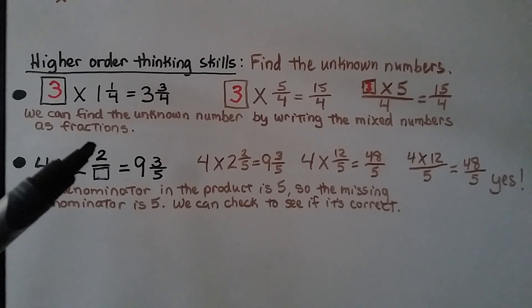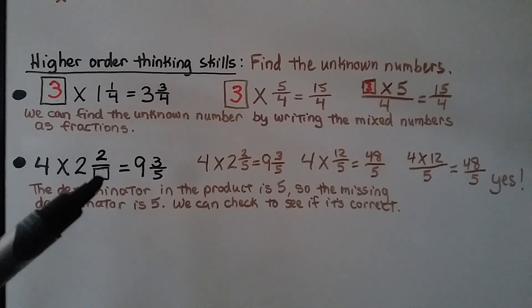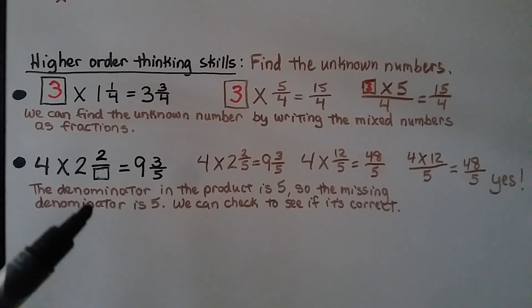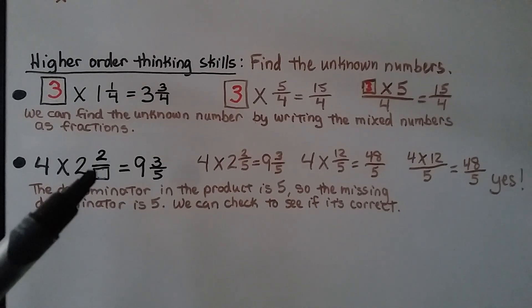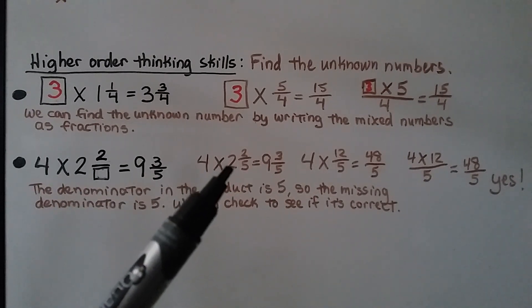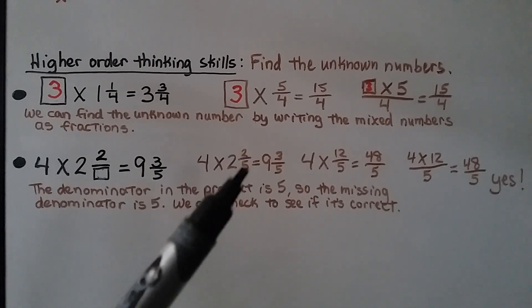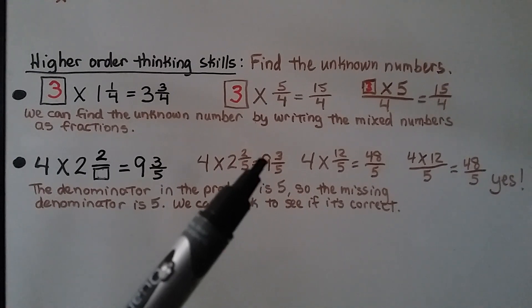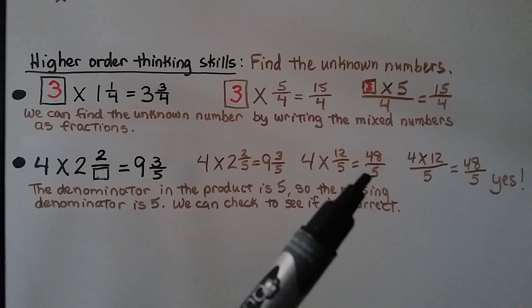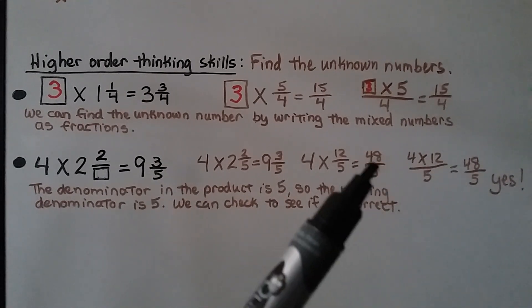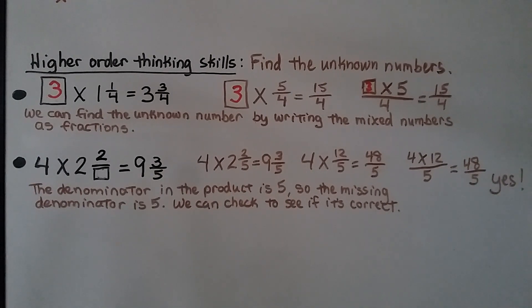Here we have 4 times 2 with 2 and a missing denominator, equal to 9 and 3 fifths. The denominator in the product is 5, so the missing denominator must be 5. We put a 5 there and do the multiplication to see if it works. If that's a 5, we'll have 2 and 2 fifths. We write these as fractions greater than 1: 2 times 5 is 10, plus the numerator 2 — that's 12 fifths. For the product, 9 times 5 is 45, plus 3 — that's 48 fifths. To multiply them, we multiply the whole number to the numerator: 4 times 12 is equal to 48, with 5 for a denominator — we have 48 fifths. It fits, so that must be a 5, matching the product.